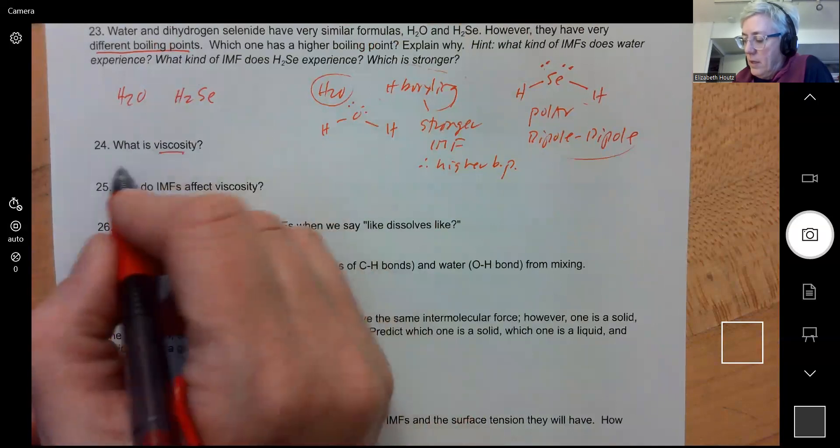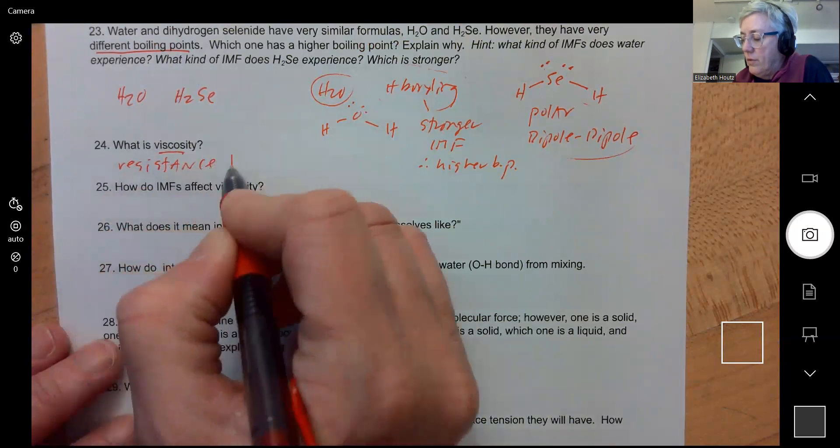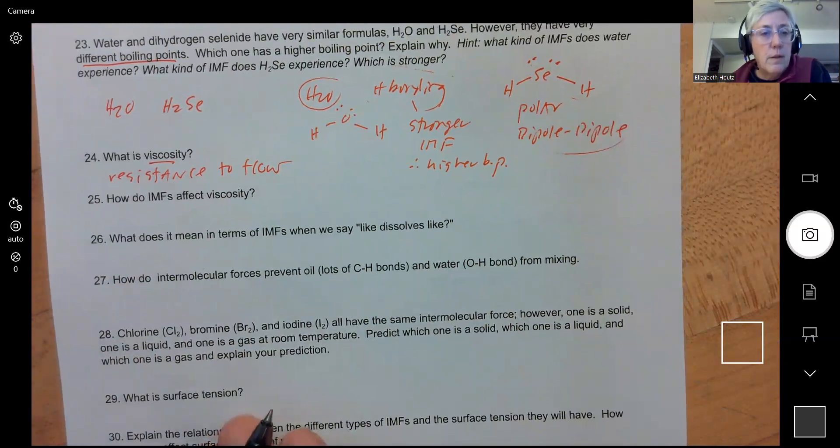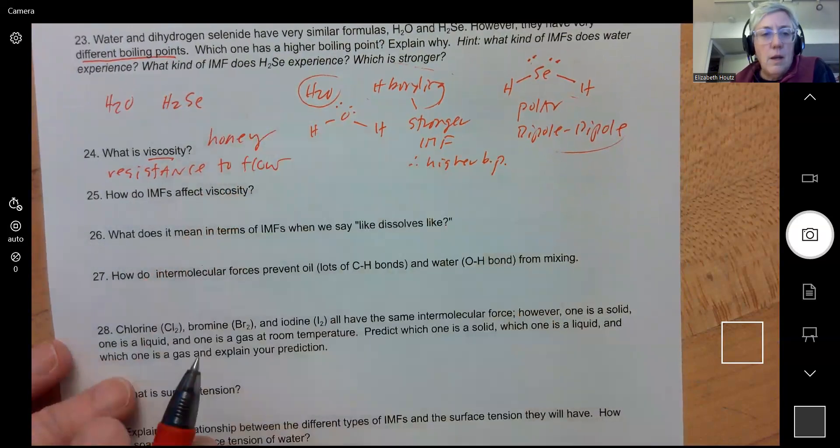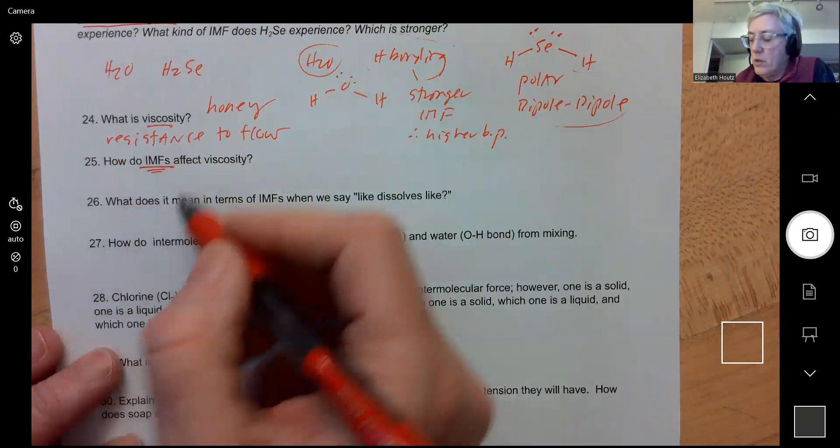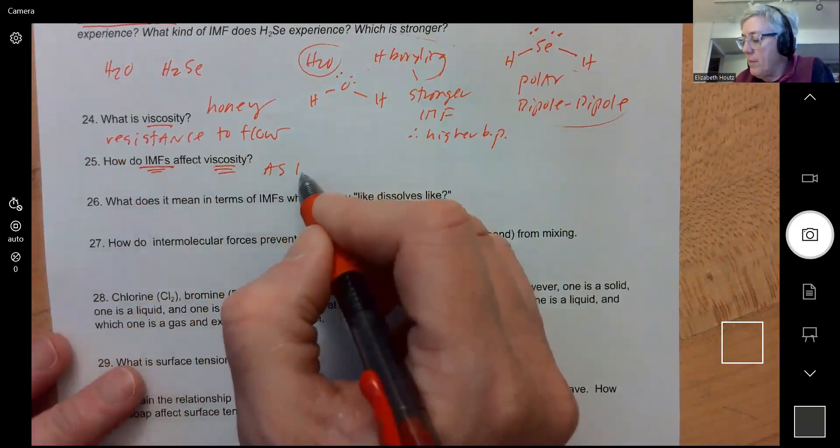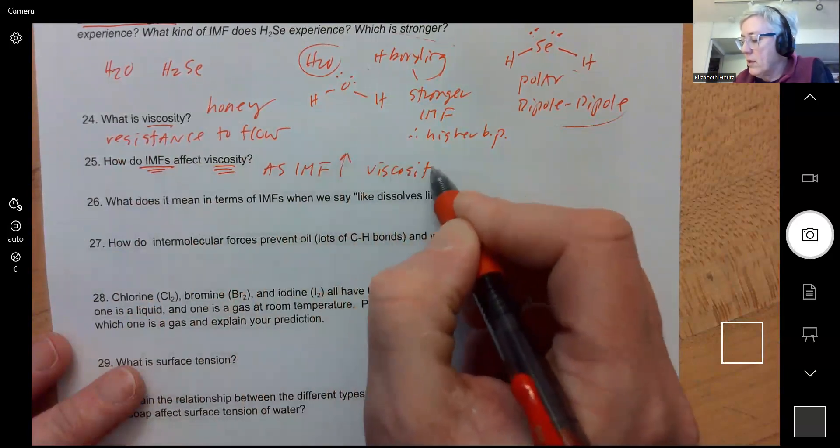Viscosity means things don't want to flow, so resistance to flow. Things like maple syrup or motor oil, honey, things that are really thick and viscous. Viscosity is the word. So the stronger the intermolecular forces are, the more viscosity something is going to have. So same idea: as the intermolecular forces get stronger, viscosity goes up.